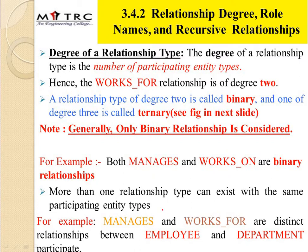More than one relationship type can exist with the same participating entity. For example, 'Manages' and 'Works For' are distinct relationships between the employee and the department participants. So if we have 'Manages' and 'Works For', both can participate with employee and department, but they are different types of relationships. An employee can manage a department and also work for a department.